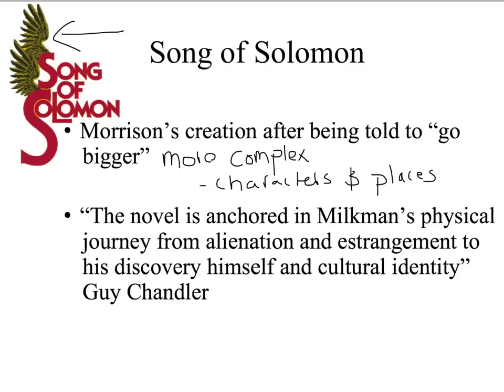Because of that, any story of discovery is going to involve layers, because it always happens that as you learn more about yourself, you learn more about the world around you — or vice versa. The more you travel, the more you learn about yourself. The more you learn about yourself, the more differently you see the world. This is very prevalent in Song of Solomon. One of the ways that Morrison adds to these layers is by the names of the characters — the names are both evocative, where they call to mind a specific image, and they are symbolic as well.